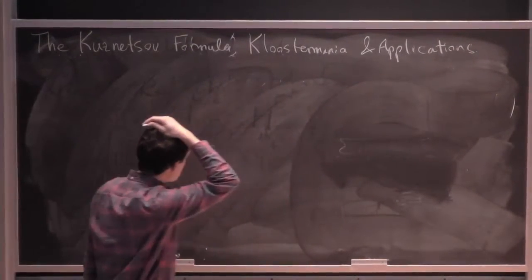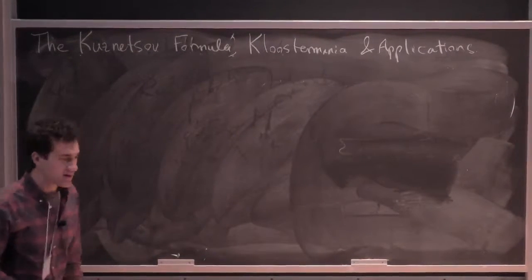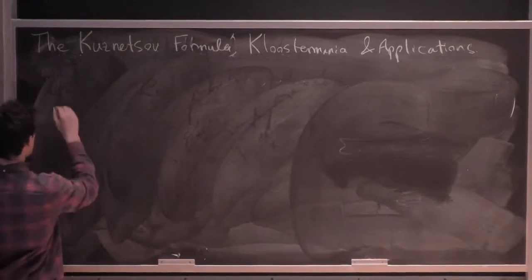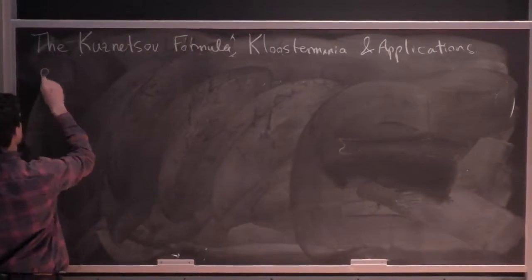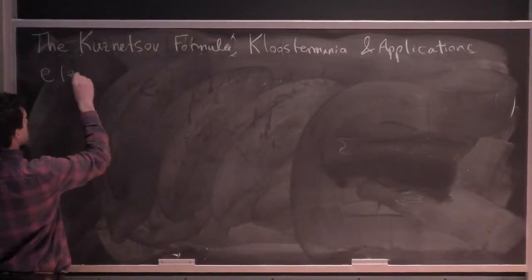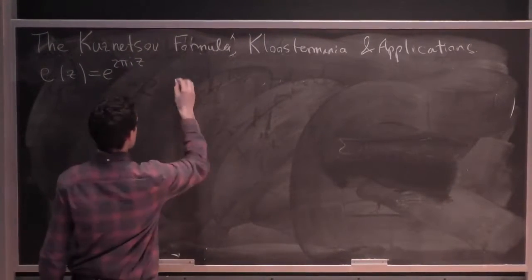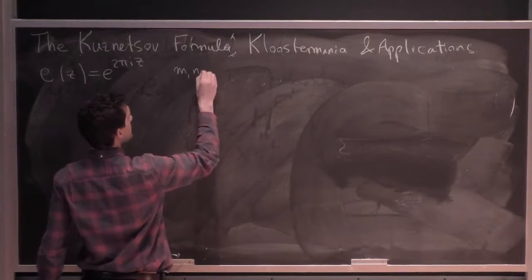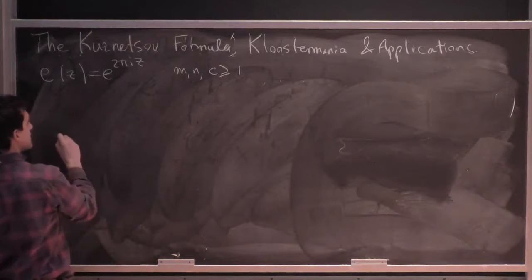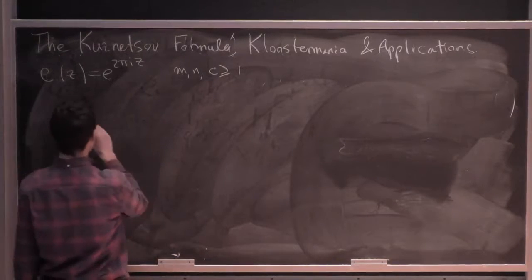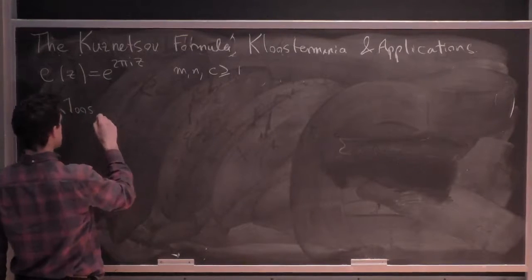Today's talk — I'll start with the middle one, Kloosterman sums. Just starting with the basic definitions: it's an analytic number theory talk, so I'll always use this notation with M, N, and C as integers. The classical Kloosterman sum is the following exponential sum.